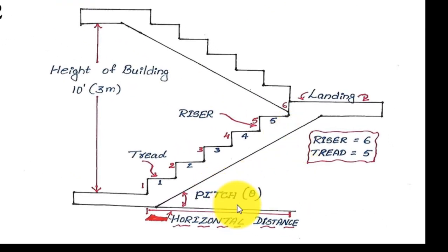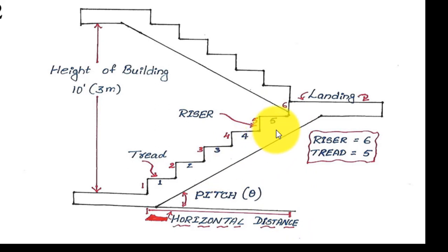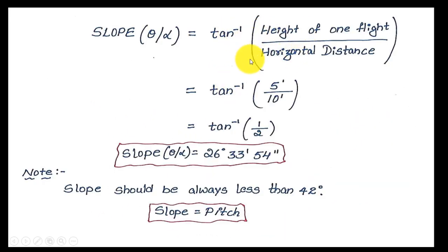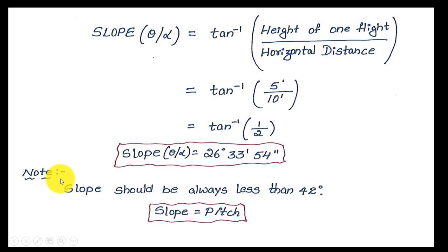Finally, we calculate the slope or pitch, which is theta. It forms a right-angle triangle where the horizontal distance is the base and the flight height is the vertical side. Using tan inverse: theta = tan⁻¹(opposite / adjacent) = tan⁻¹(height of one flight / horizontal distance) = tan⁻¹(5 / 10) = tan⁻¹(0.5) ≈ 26°54'. The slope should always be less than 42 degrees. Our value of approximately 26.9 degrees is acceptable.